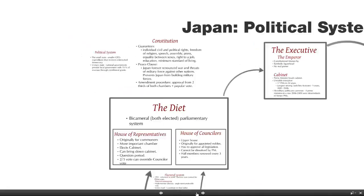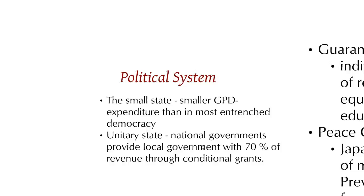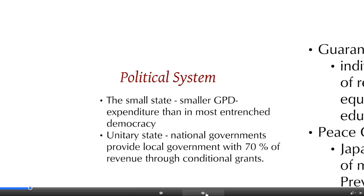This is a tutorial of the Japanese political system. Just an overview: compared to many other countries, it has a fairly small state — its welfare system and expenditures in terms of GDP are actually smaller than in most entrenched democracies. It's also a unitary state, so national governments provide local governments with 70% of revenue through conditional grants, placing Japan in the same category as France and the United Kingdom — not a federal system.